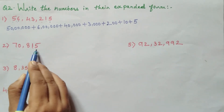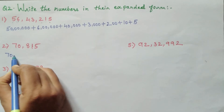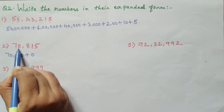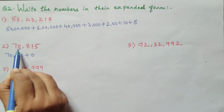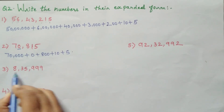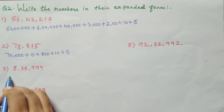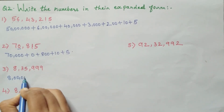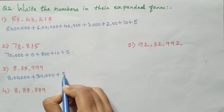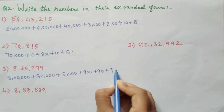Second one: 70,815. To write the expanded form, we write 70,000 + 0 + 800 + 10 + 5. We write 0 here because in the thousands place there is a 0. Number 3: 8,35,999. To write the expanded form, we write 8,00,000 + 30,000 + 5,000 + 900 + 90 + 9.